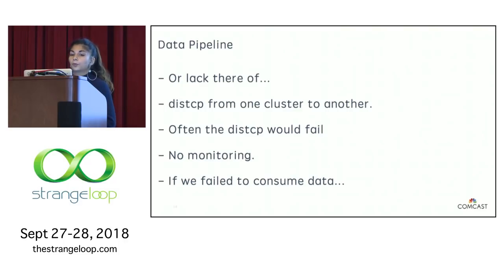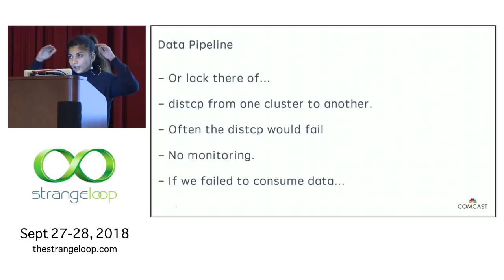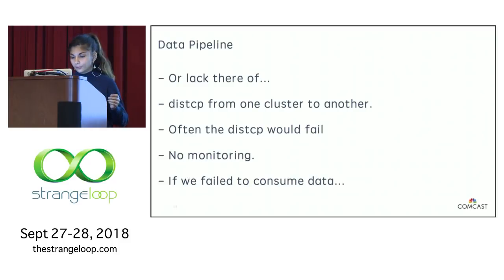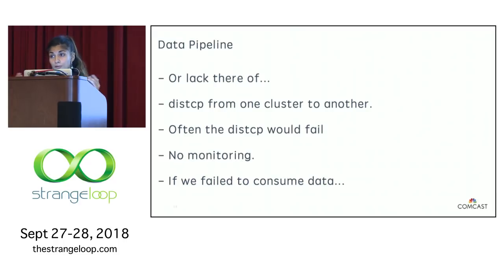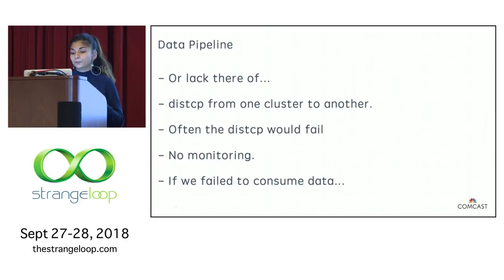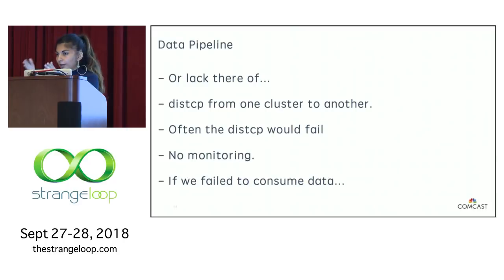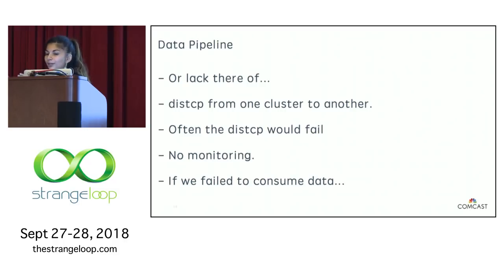Our second pain point was the data pipeline — or lack thereof. We didn't have a data pipeline. Data is probably the most important aspect of a machine learning platform, yet we were doing a distcp from one Hadoop cluster to ours, and that would often fail for networking issues with no monitoring. We had no idea when it failed — we'd realize two weeks later that we hadn't received any usage data. We weren't evaluating our model, just continuously training it and pushing predictions to production without monitoring for staleness. It was weak sauce altogether.